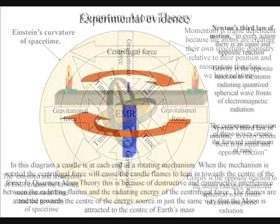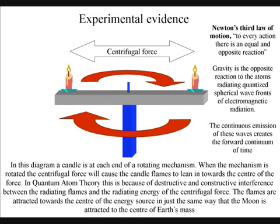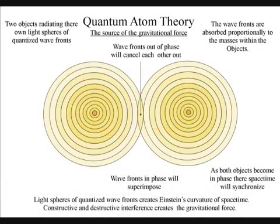In this diagram, a candle is at each end of a rotating mechanism. When the mechanism is rotated, the angular momentum will cause the candle flames to lean in towards the centre of the energy source.